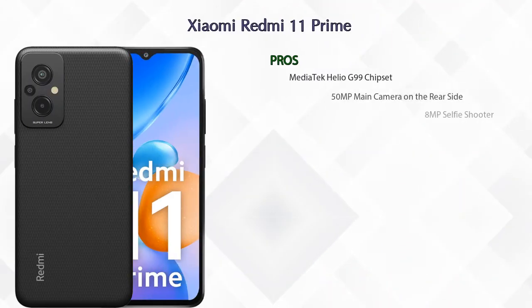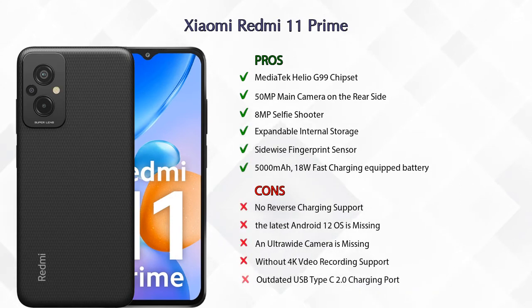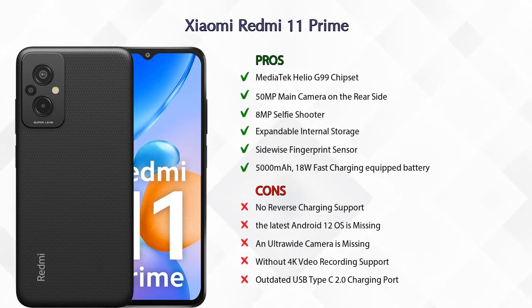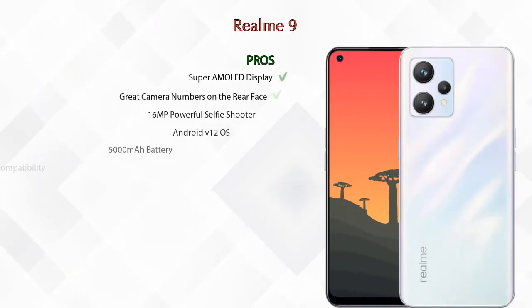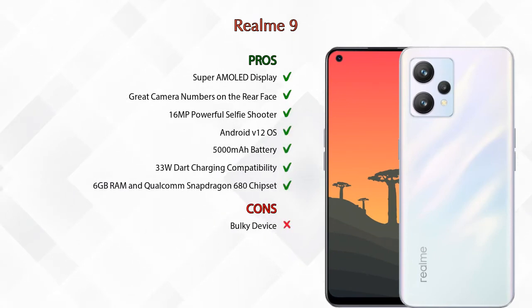Now let's talk about pros and cons. Xiaomi Redmi 11 Prime has six pros and five cons, while Realme 9 has seven pros and only one con.